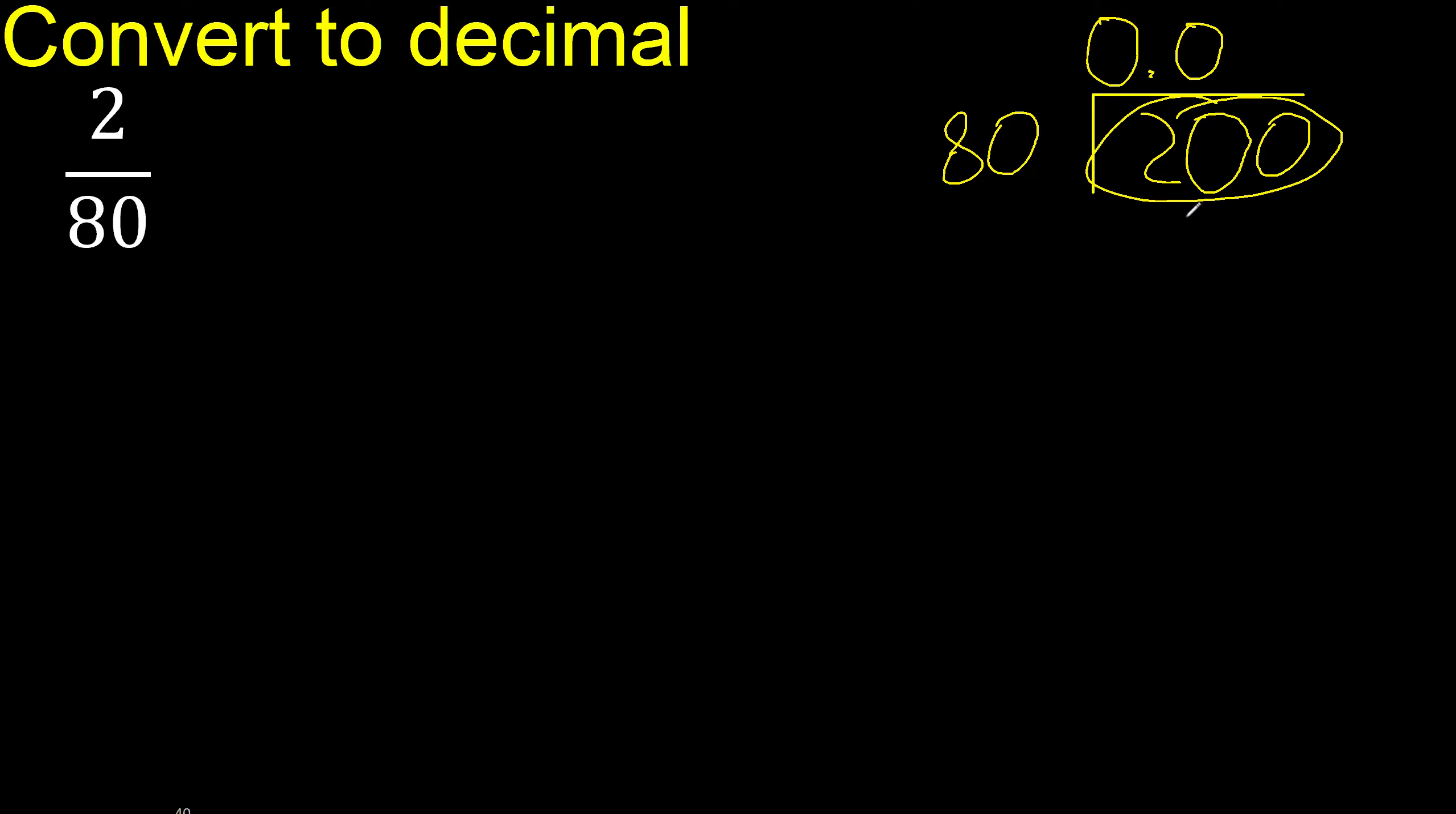200 is not less than 80, therefore with 200. 80 multiplied by what number is nearest to 200? Multiplied by 3 is 240, excessive.